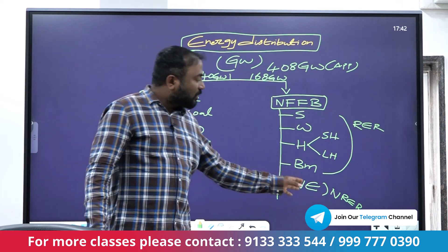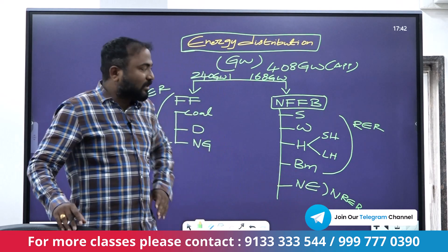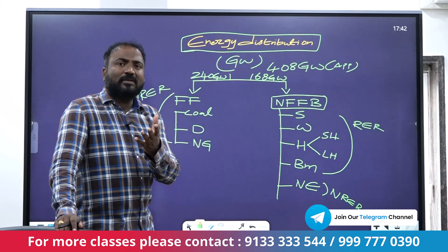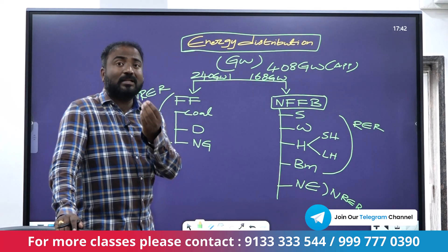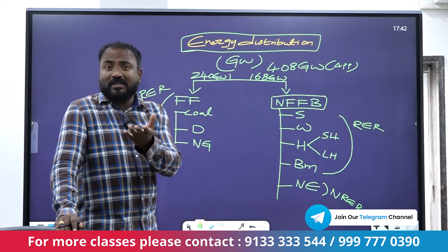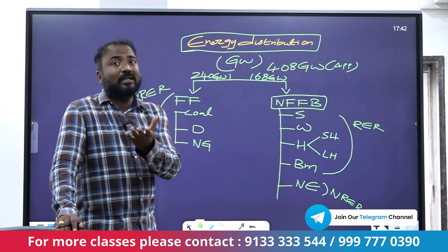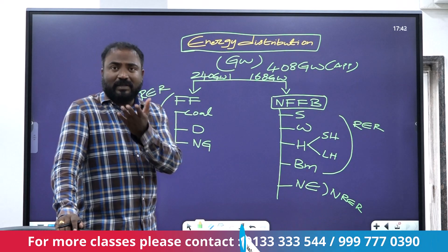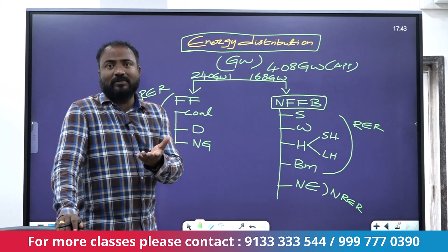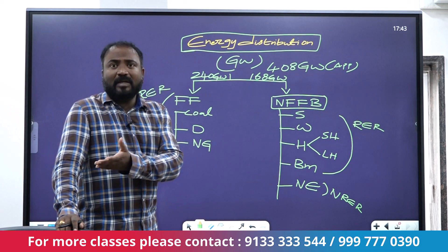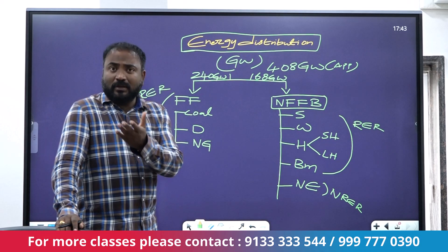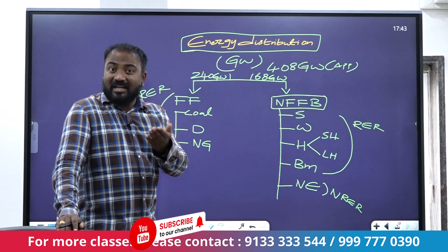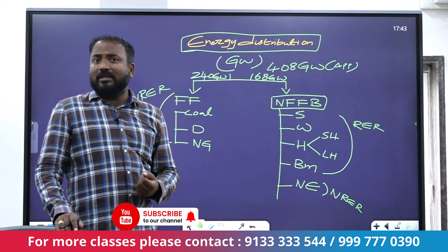Nuclear energy ranks in 5th place in India's power contribution. Nuclear power stations in India include Kaiga in Karnataka, Kudankulam in Tamil Nadu, Kakrapar in Gujarat, and Tarapur in Maharashtra.